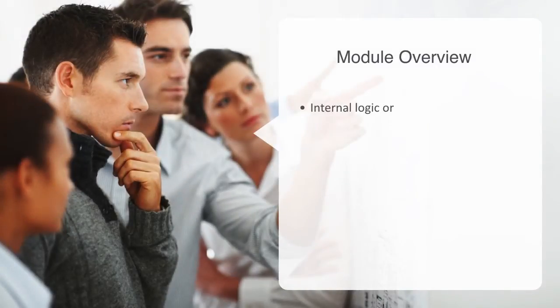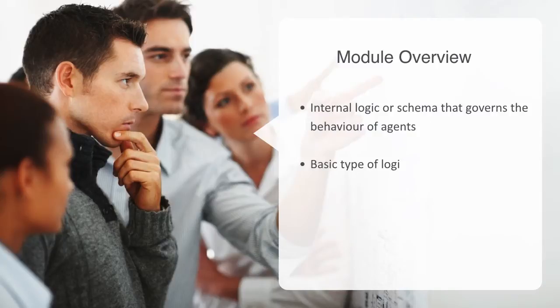In this module, we're going to talk about the internal logic or schema that governs the behavior of agents within complex adaptive systems. This logic can span from the very elementary to the very complex, and thus we will break it down into two different types.